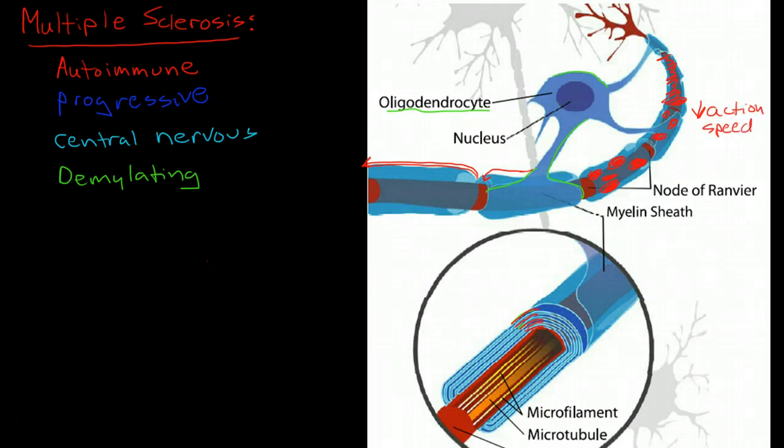And actually, because in the node of Ranvier, we have a large collection of voltage-gated sodium channels. And this allows the propagation of the action potential to jump from the node of Ranvier to node of Ranvier. But underneath the myelin, there are no or very few voltage-gated sodium channels. So if we remove a lot of the myelin sheath, we can actually stop the action potential completely. So depending on how much damage there is, the action potential may stop altogether.